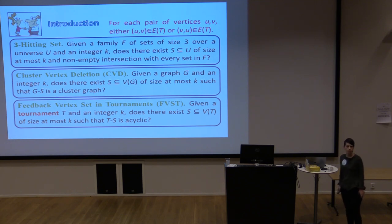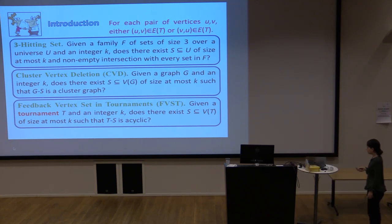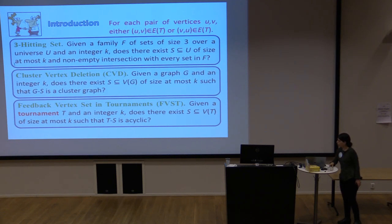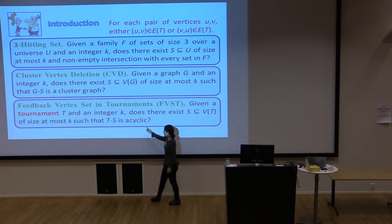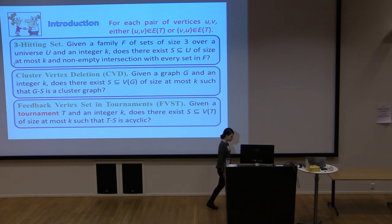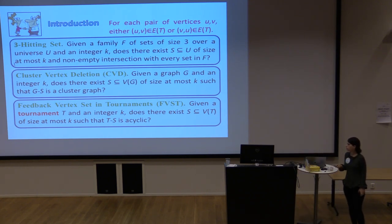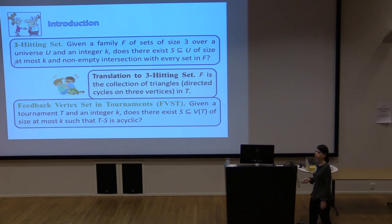The second problem we looked at is Feedback Vertex Set in Tournaments (FVST). Here you are given a tournament — a directed graph where for every pair of vertices UV, at least one of the edges UV or VU is present — and you ask whether you can find a set S of at most K vertices such that deleting them makes the tournament acyclic. This can be cast as a special case of 3-Hitting Set: the family F is the collection of triangles (directed 3-cycles), since a tournament is acyclic if and only if it has no triangle.